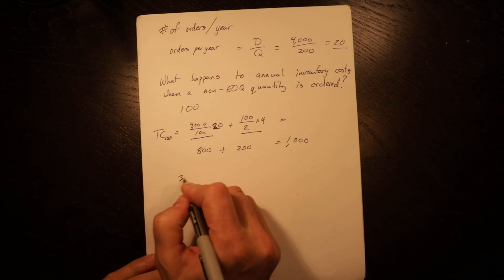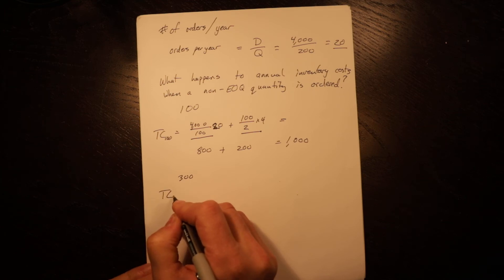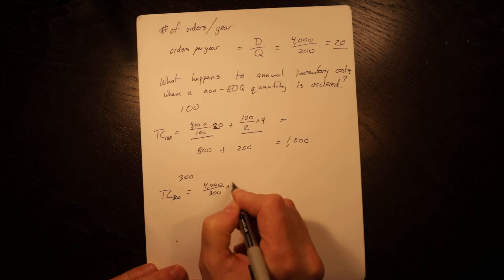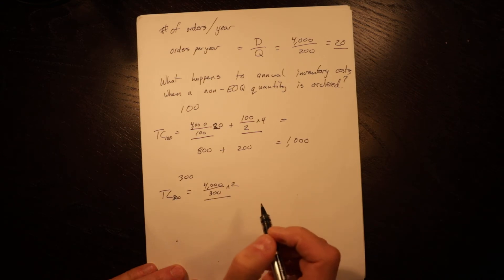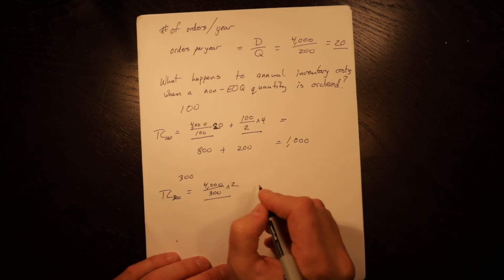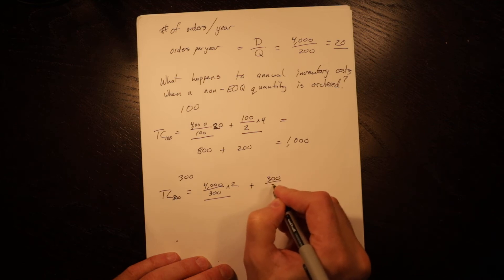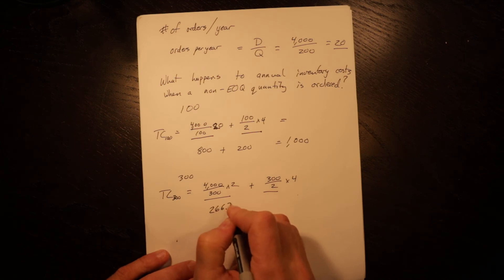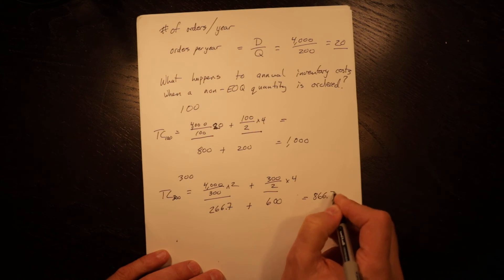Now let's look at 300 to show you what happens on the other side. Total cost for 300 equals 4,000 divided by 300 times 20, so our setup costs are going to go down because we're going to order more but then order less frequently. Plus 300 divided by 2 times 4, so our average inventory is going to go up. That equals 266.7 plus 600 equals 866.7.